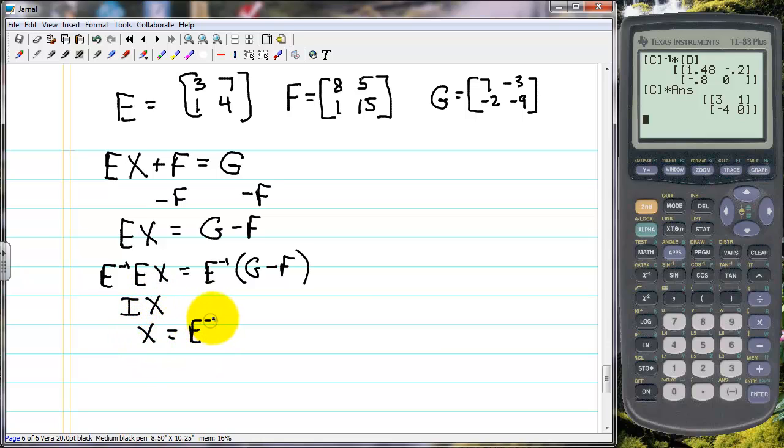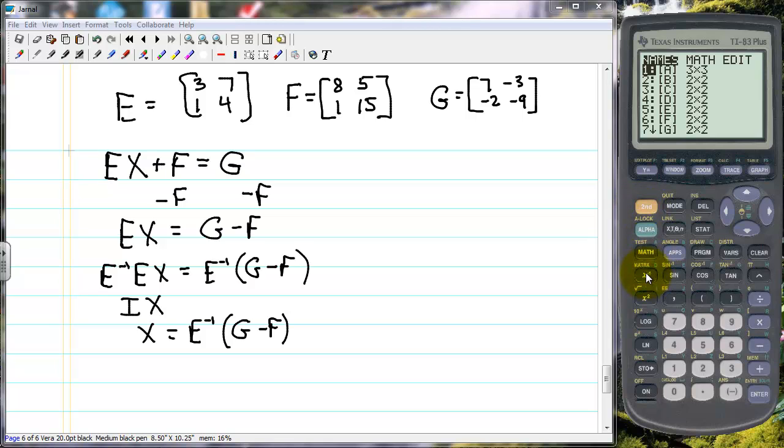So to solve this matrix equation we're going to do this computation in the graphing calculator. I've already entered into E, F, and G those matrices. We explained how to do that in an earlier video. So let's clear our screen here. So we've got second matrix E which is 5, and we're taking its inverse. And then we need to multiply that times, and we need a parenthesis, matrix G, which is 7, minus matrix F, which is 6, close our parenthesis, and again we get our solution. This is the value of matrix X here that makes this equation true.